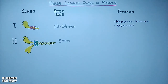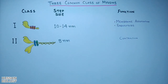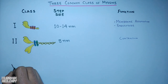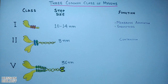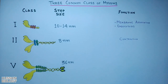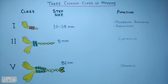Class 2 myosins have an 8 nanometer step size and aid in muscle contraction. The last major myosin class is class 5, with a step size of 36 nanometers, and it aids in organelle transport. Myosin 5 molecules have two head domains and six light chains per neck, as shown in the diagram.